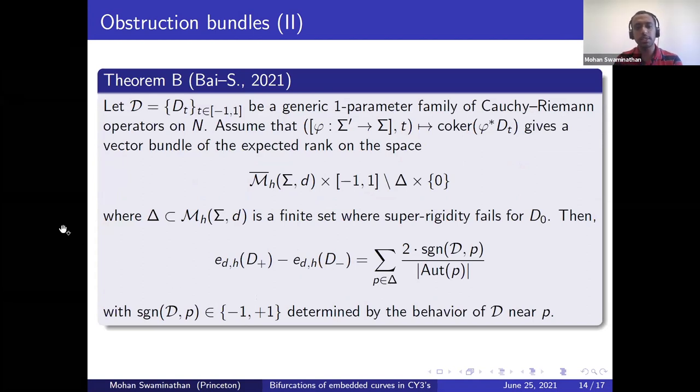Here's our result. Let's say script D is a generic one parameter family of Cauchy-Riemann operators on N. And let's assume that the cokernel bundle is well-defined and of expected dimension for all non-zero times. And at t equals zero, super rigidity fails at exactly a finite set delta. And it's very important as an assumption in this theorem that this delta occurs within the space of branch covers with smooth domain. Under this assumption, we can describe how the Euler class changes from negative t to positive t. And we have a local to global type formula. The Euler class at positive t minus the Euler class at negative t is a sum of local contributions coming from each point in delta. And this local contribution is two times a sign divided by the size of the automorphism group.